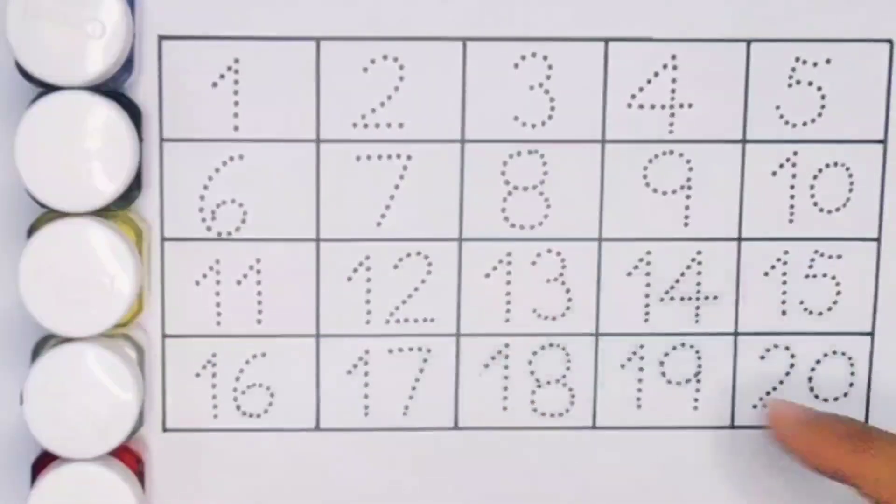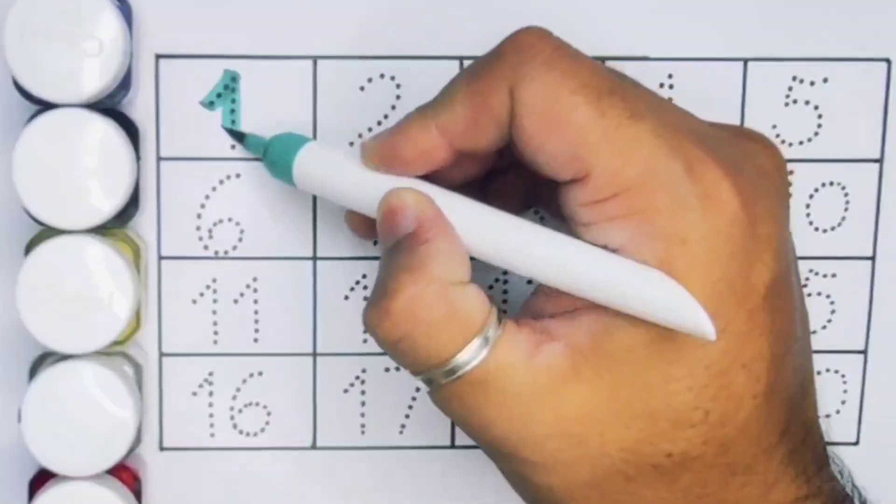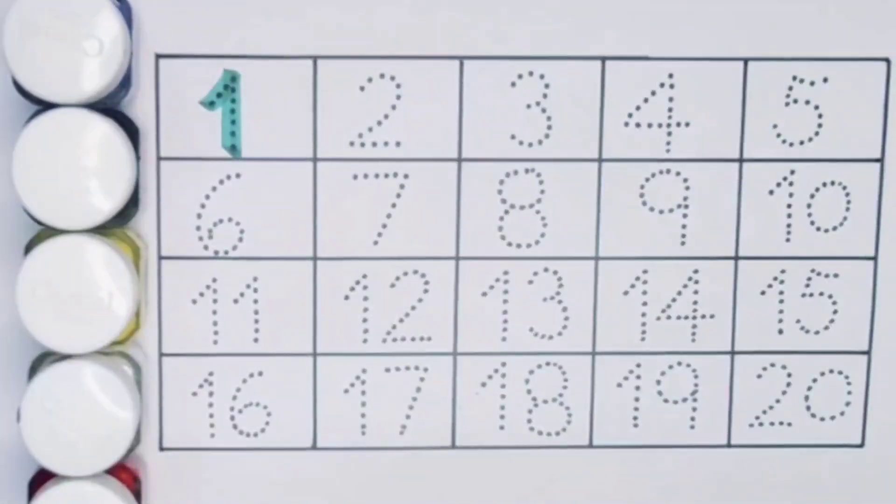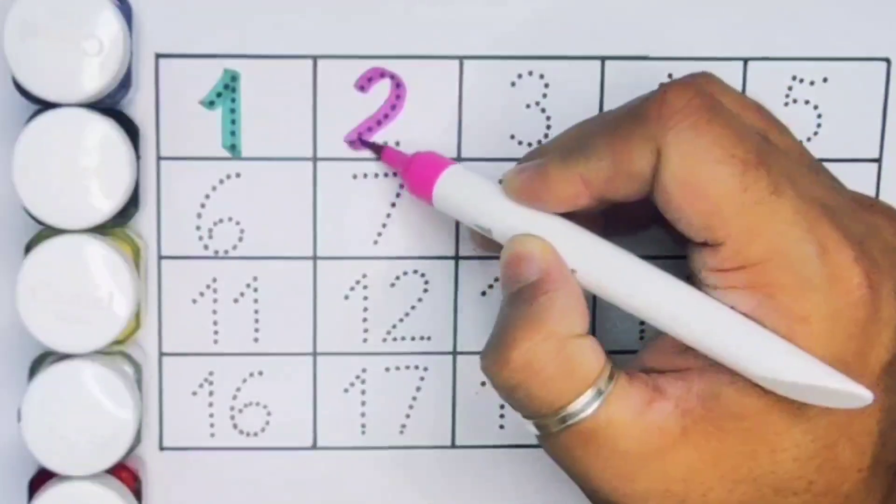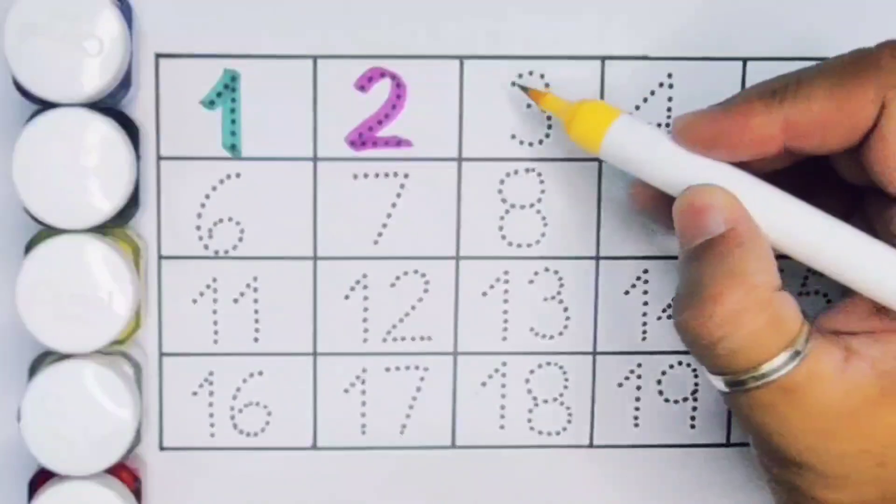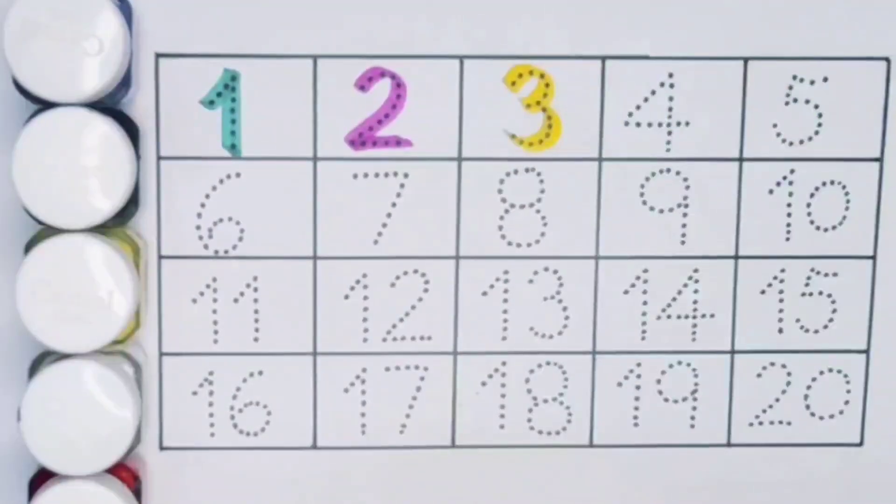Now let's learn the numbers counting 1 to 20. First 1. Number 1. Next kids 2. Number 2. Next kids 3. Number 3.